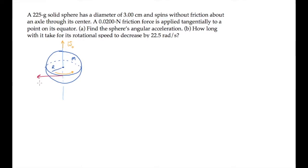We're told that a frictional force is applied tangentially to a point on its equator. It's oriented this way so that it will slow down the spin. We're asked in part A to find the angular acceleration, alpha.